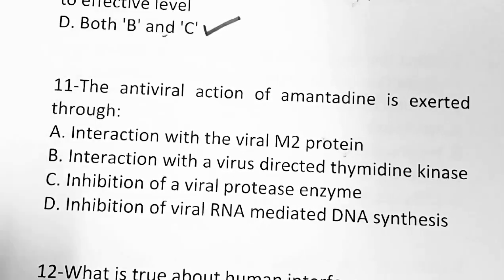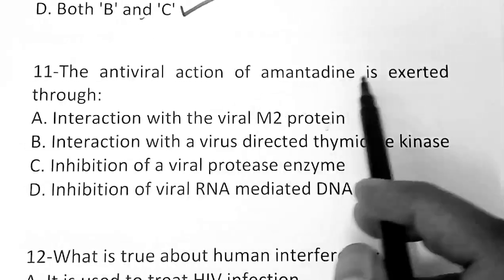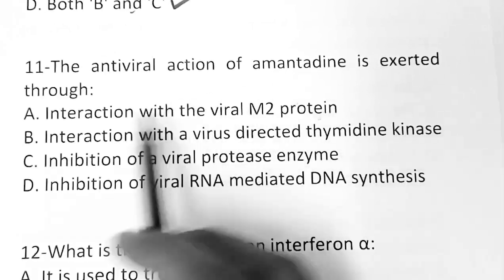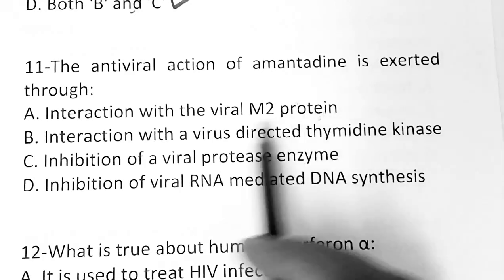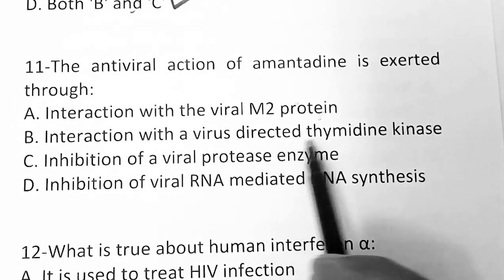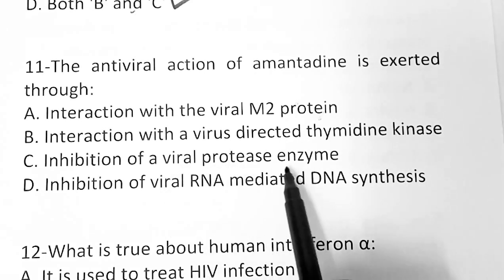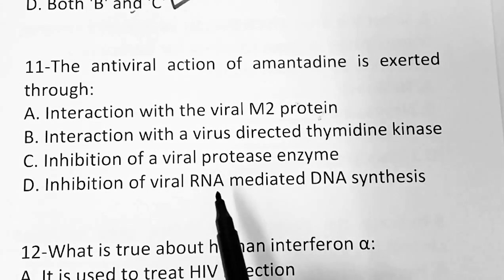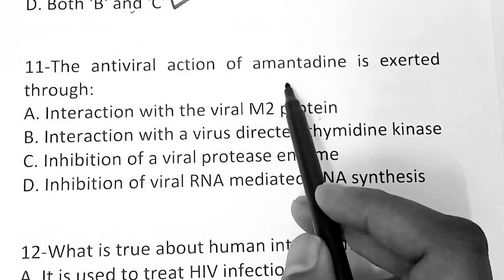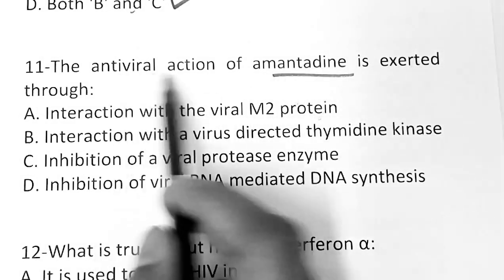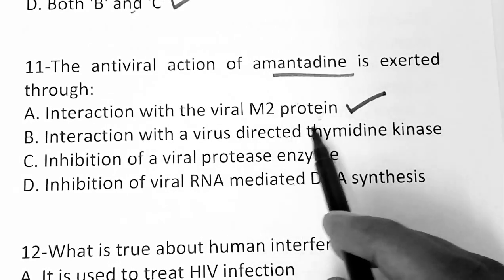Question 11: The antiviral action of amantadine is exerted through — Option A: interaction with the viral M2 protein, Option B: interaction with a virus-directed thymidine kinase, Option C: inhibition of a viral protease enzyme, Option D: inhibition of viral RNA-mediated DNA synthesis. The correct answer is Option A — interaction with the viral M2 protein.